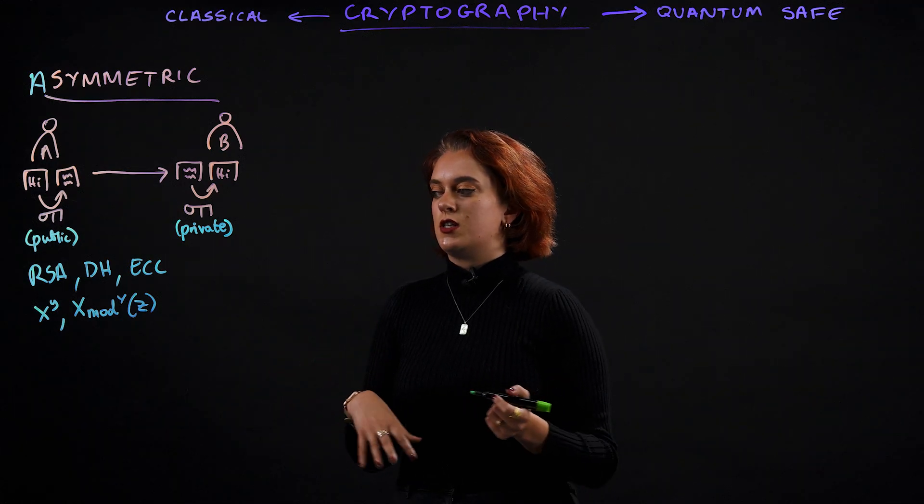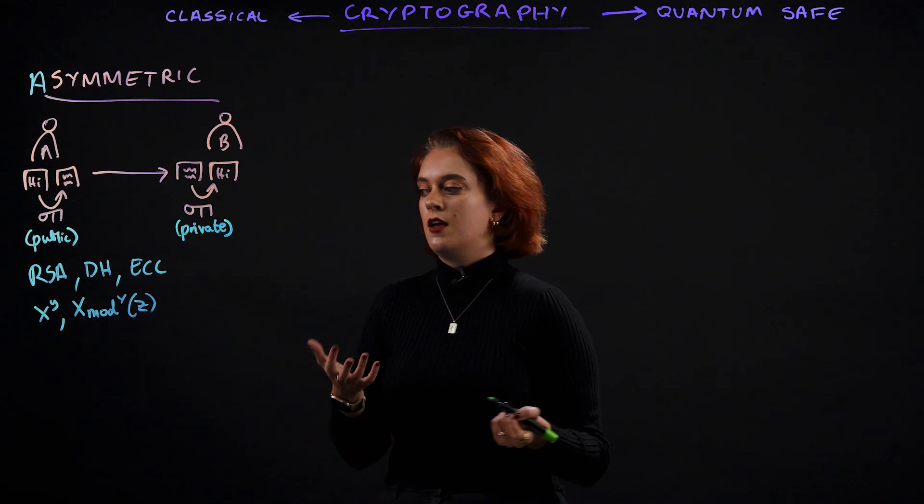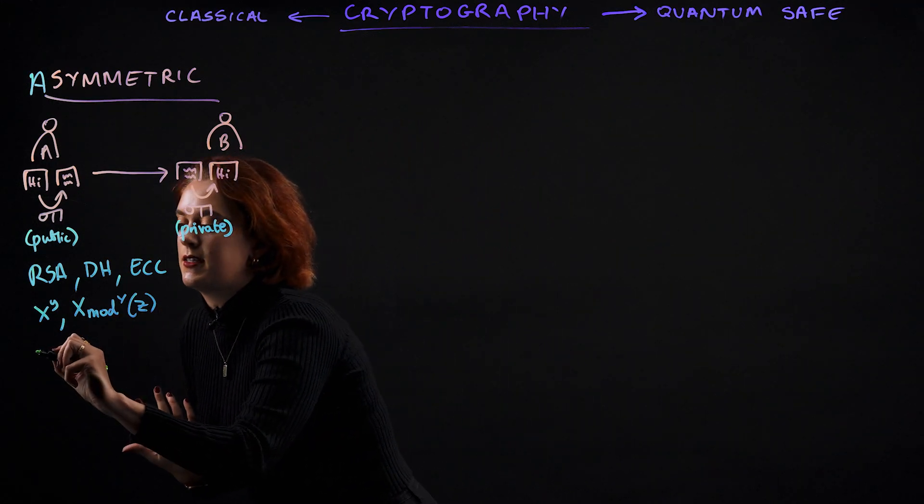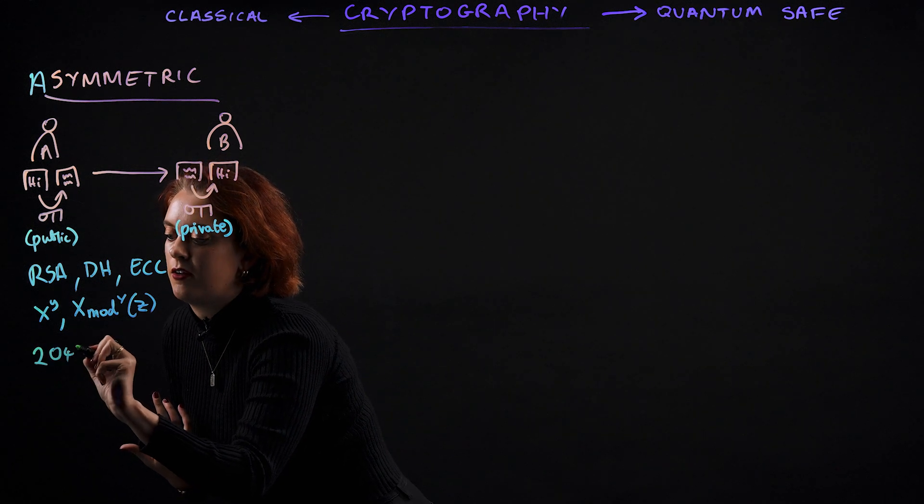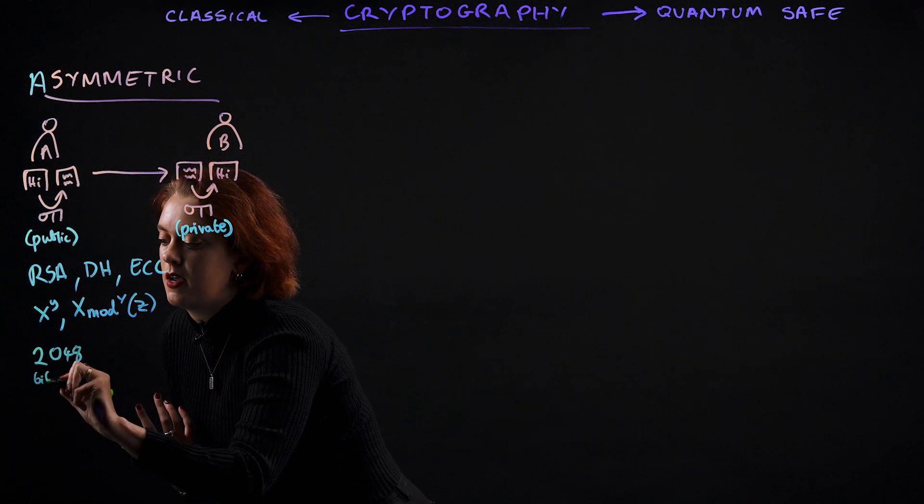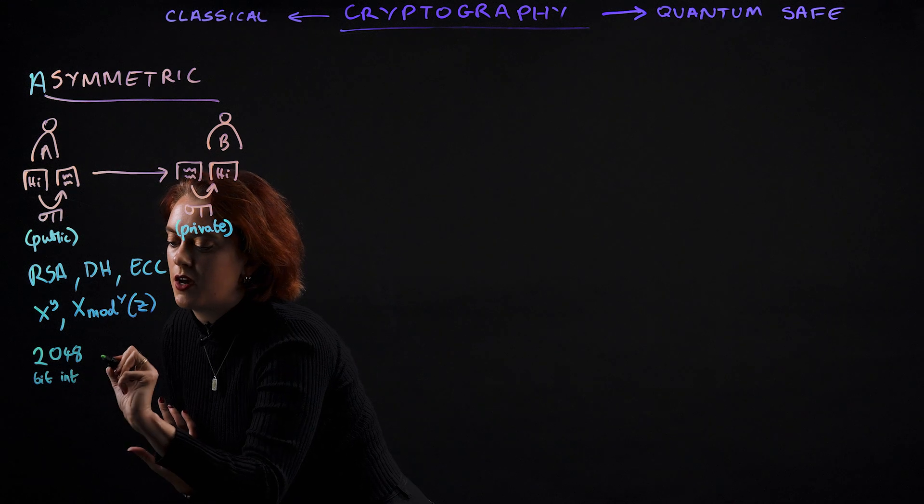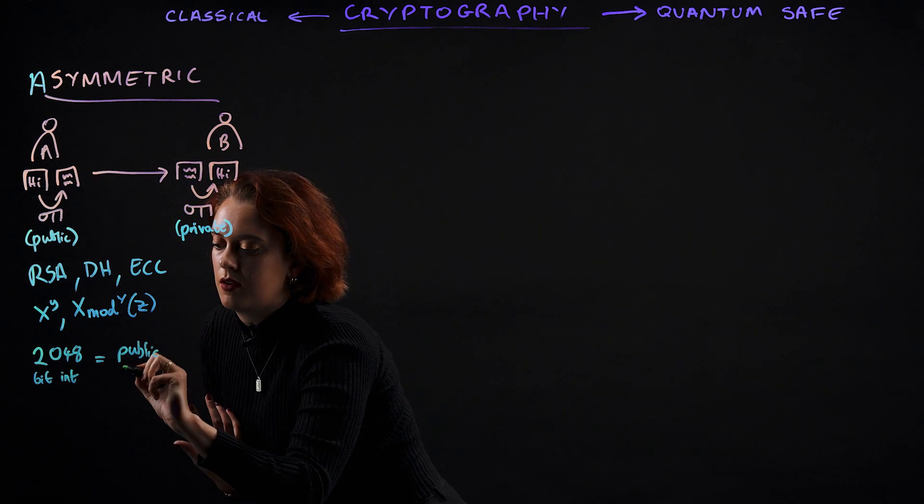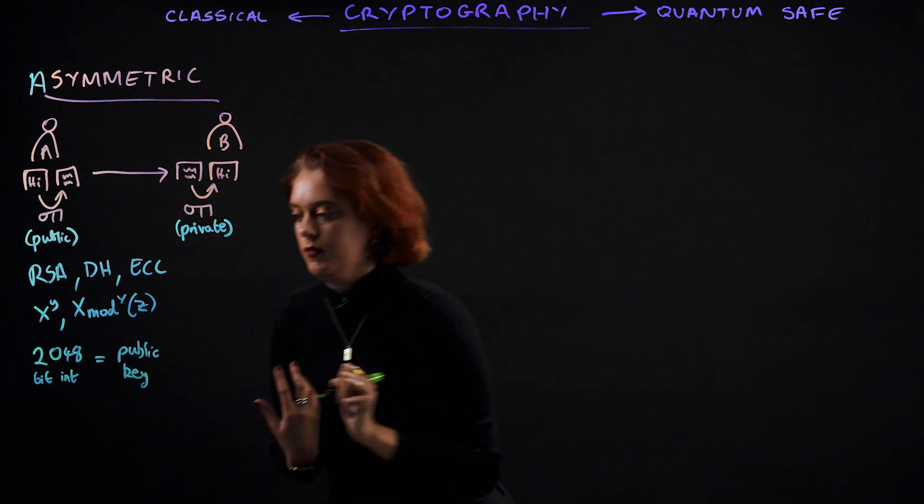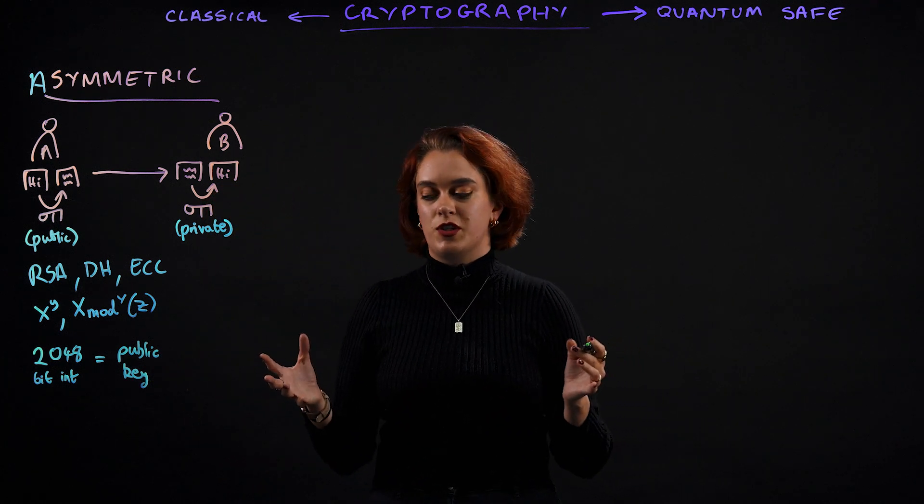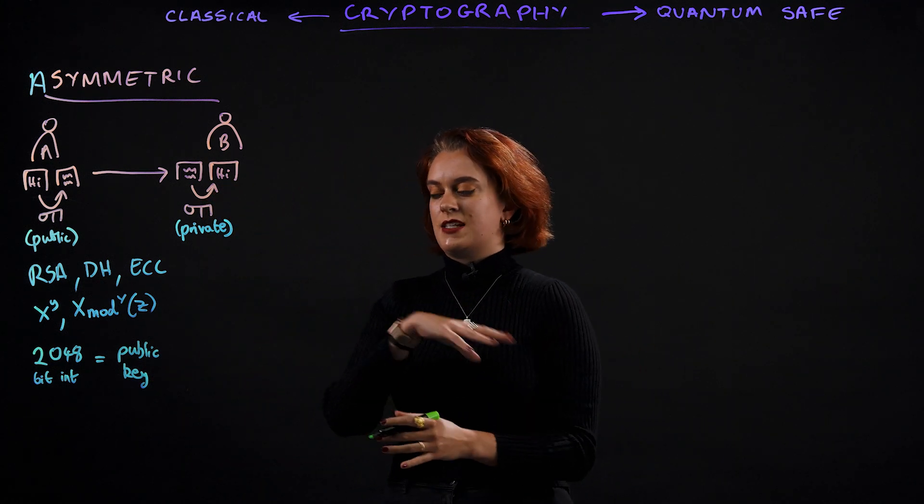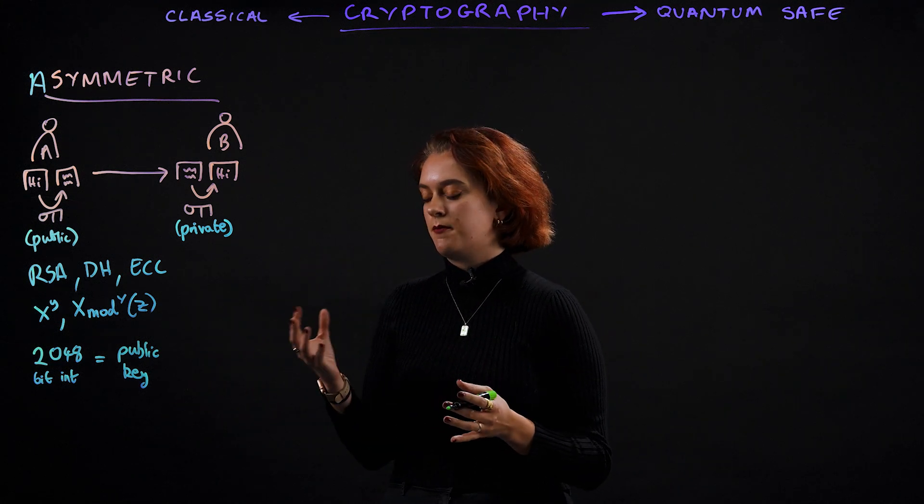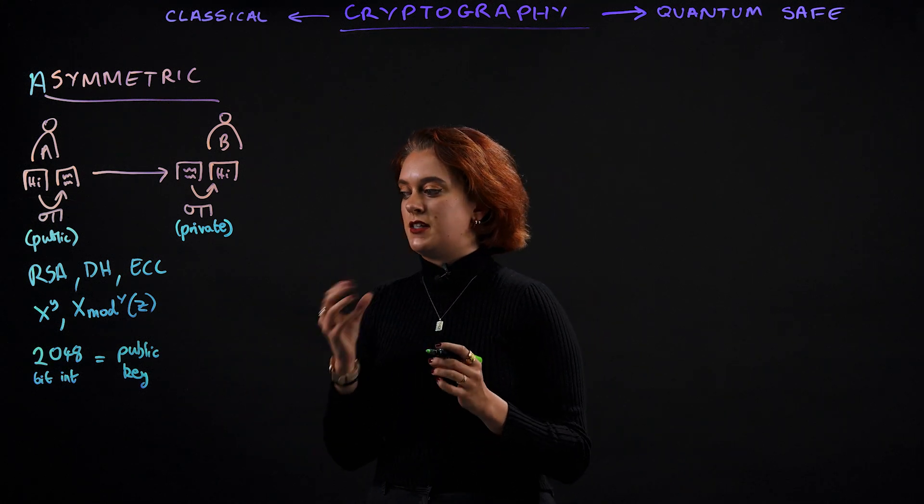So for example, if we wanted to crack RSA, we would need to factorize a 2048-bit integer, which serves as the public key. Using a classical computer, this could take potentially millions of years. But quantum computers are different.